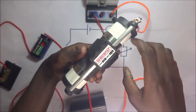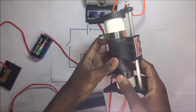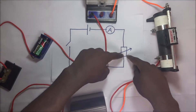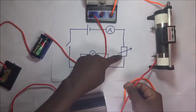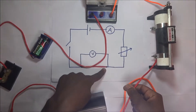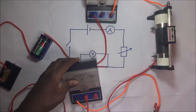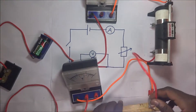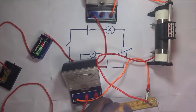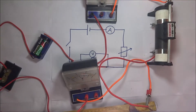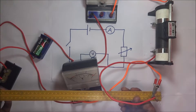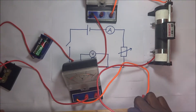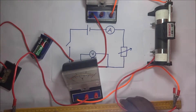This is our rheostat right here, and it has a maximum resistance of up to 20 ohms. We connect the terminal leading out of the rheostat to our wire. Our wire from the rheostat is connected to our constantan wire. We have held our constantan wire onto a ruler and fastened it there.